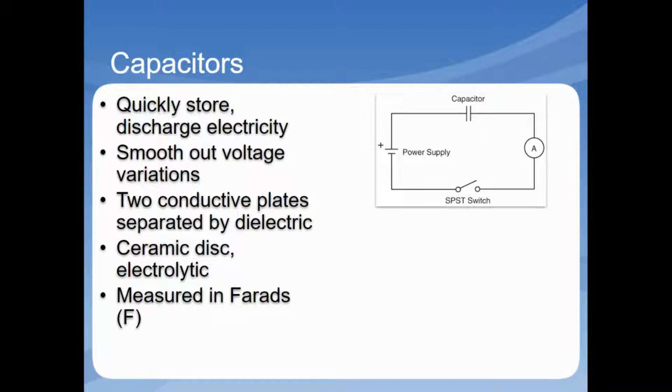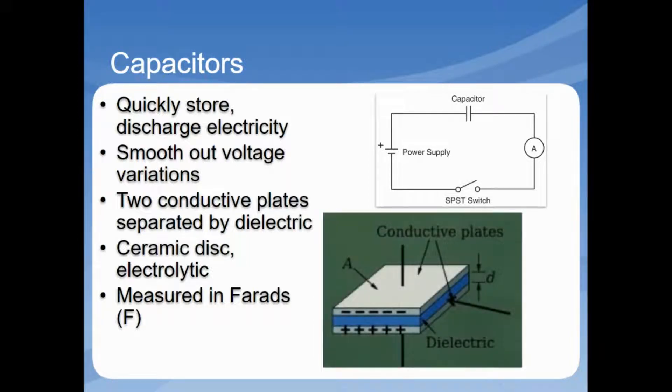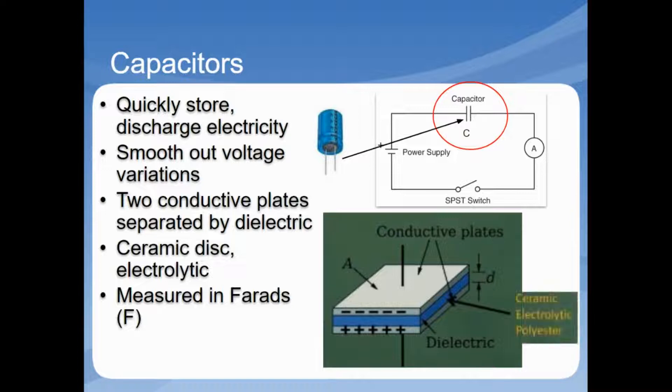Capacitors can store and release energy, but unlike a resistor, it does not require or dissipate power. Rather, it quickly stores and discharges electricity and smooths out voltage variations. The basic structure of a capacitor consists of two metal plates separated by a dielectric. The dielectric is simply an insulator that can store energy by becoming polarized. Based on what we use for the dielectric material, there are different types of capacitors such as ceramic, polyester, and electrolytic capacitors. Capacitors are measured in farads and are usually represented using the letter C, as you can see from this example.